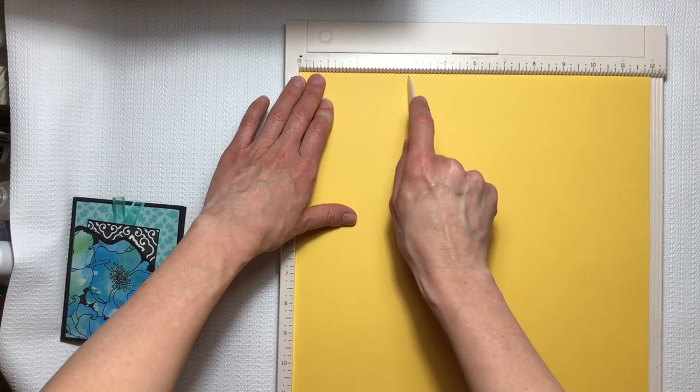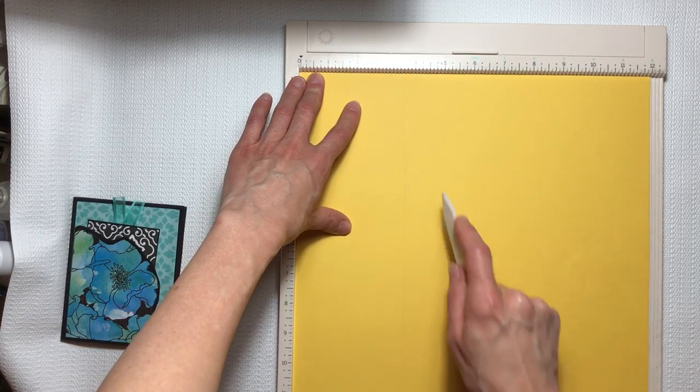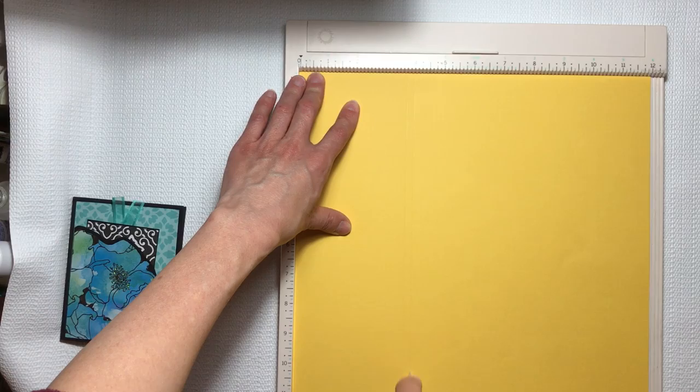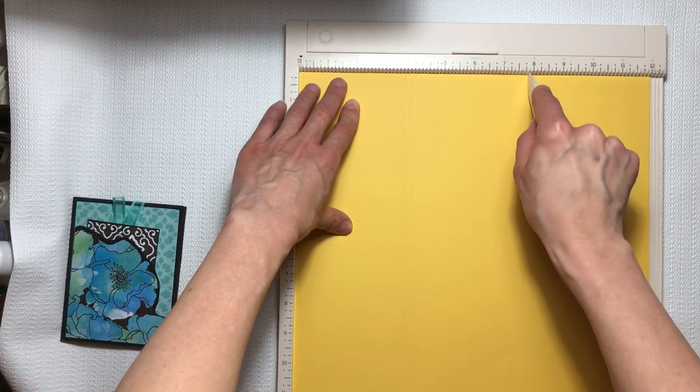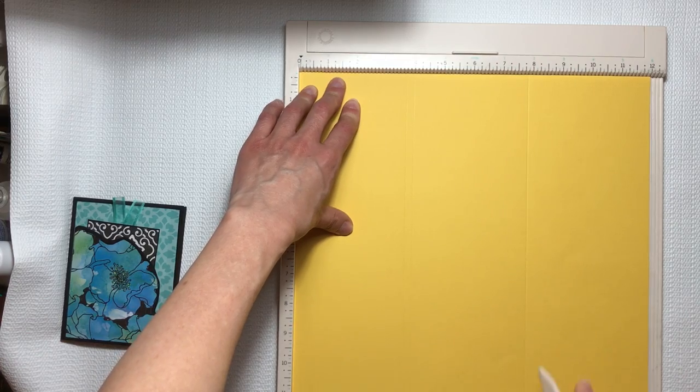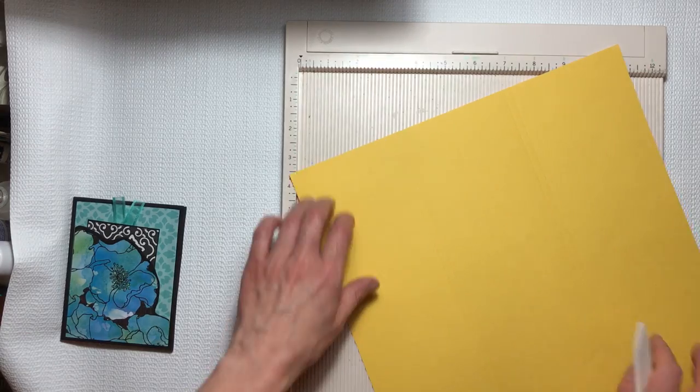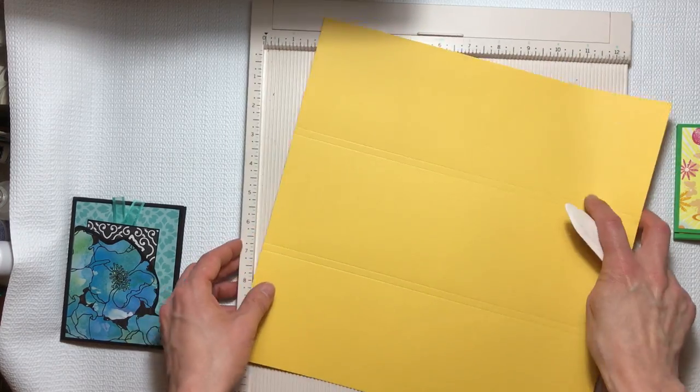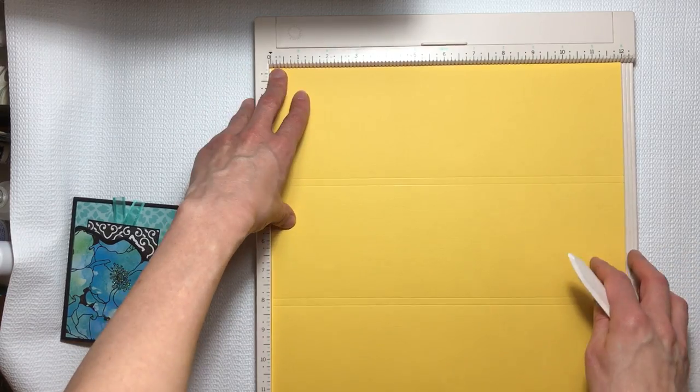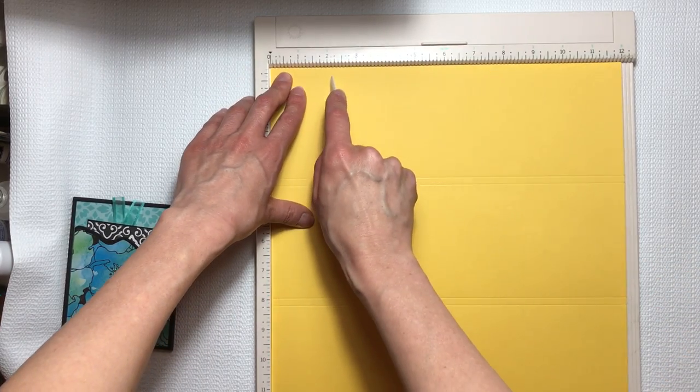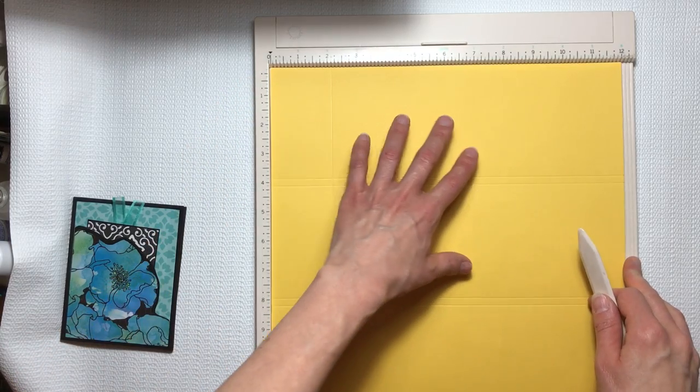You're going to score at three and three-fourths, at four, seven and seven-eighths, and eight and one-eighth. Turn the page 90 degrees to the left, then score it at two and an eighth and then at seven and one-fourth.